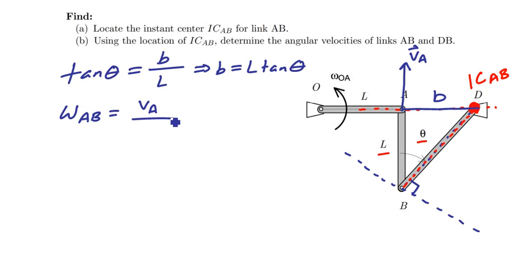Divided by the distance between the points where I know the velocity, namely A, and the point where it is the instant center of that bar, namely point D. And so I can divide this by length B.